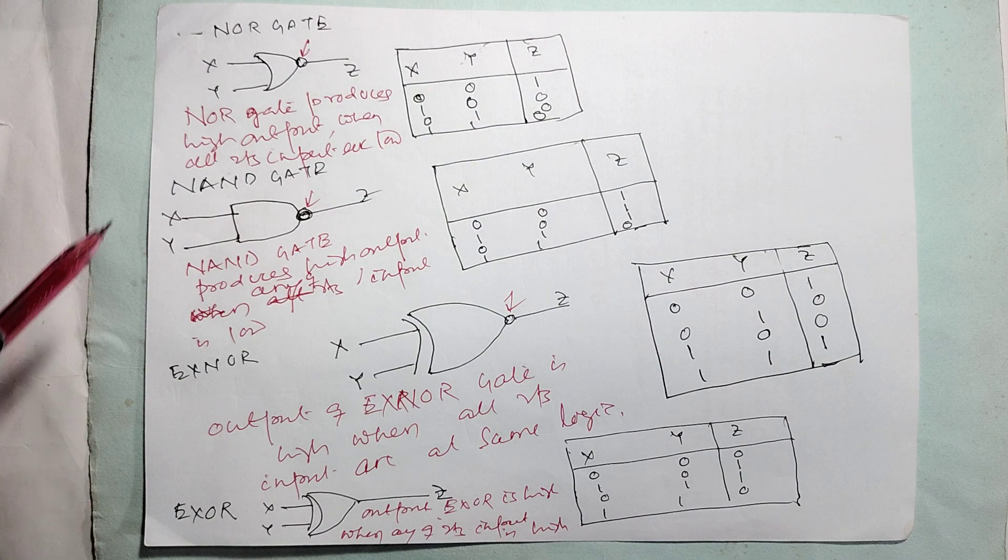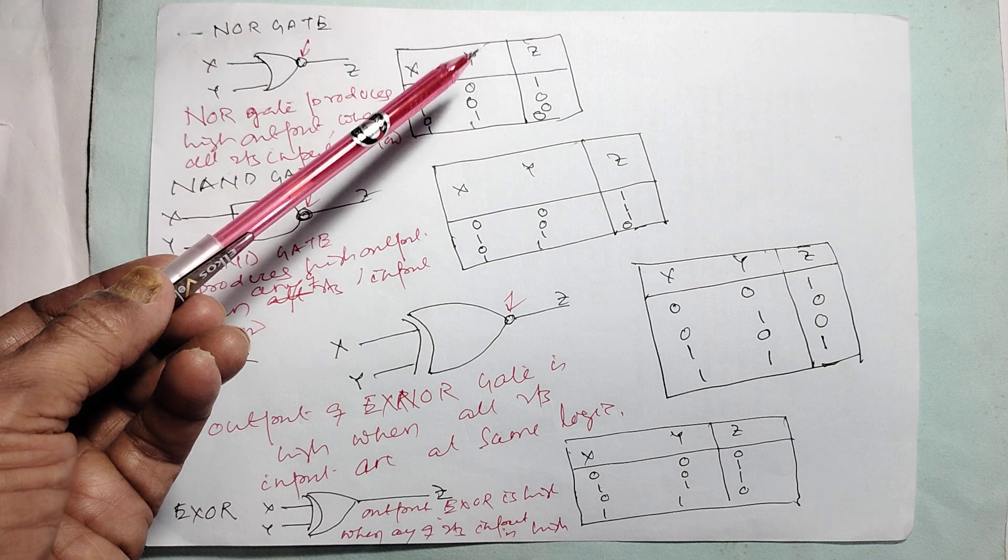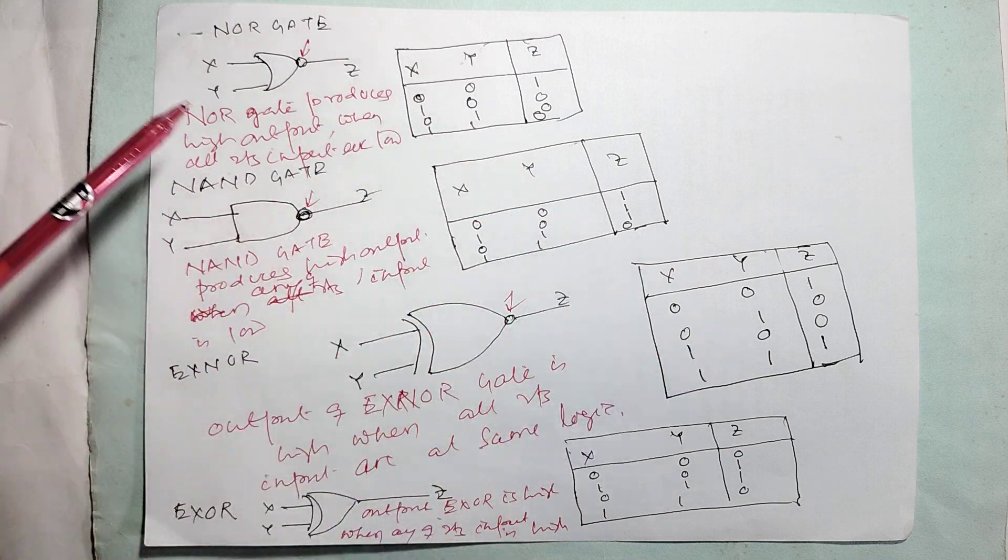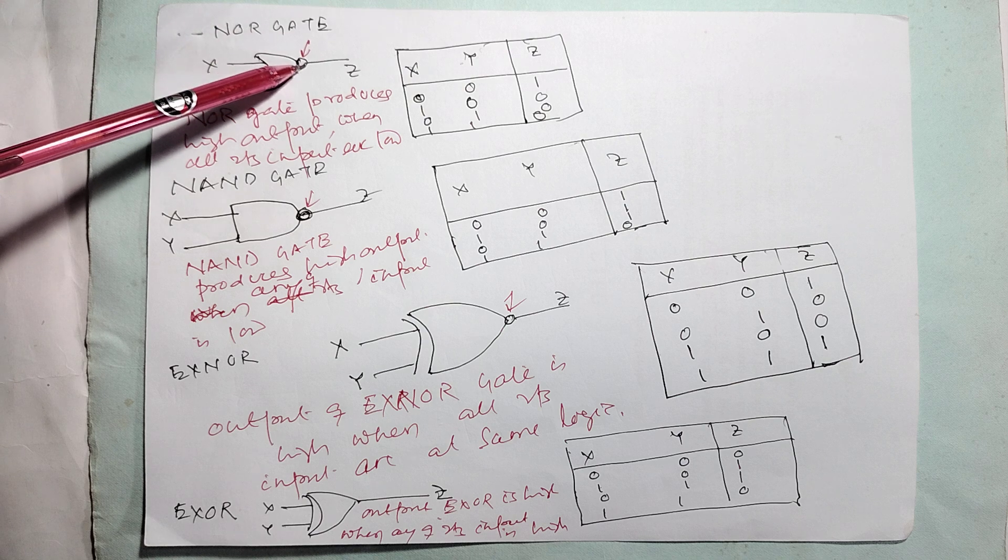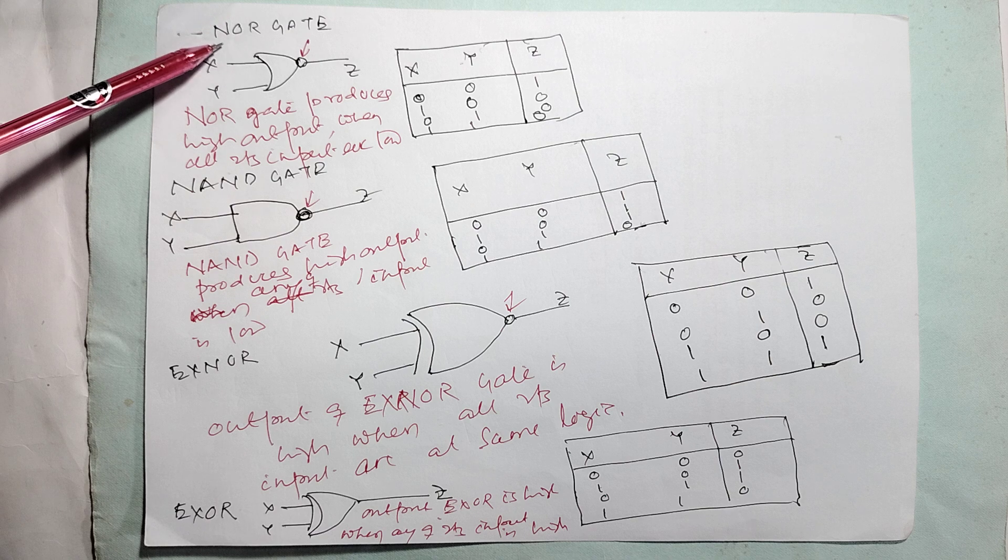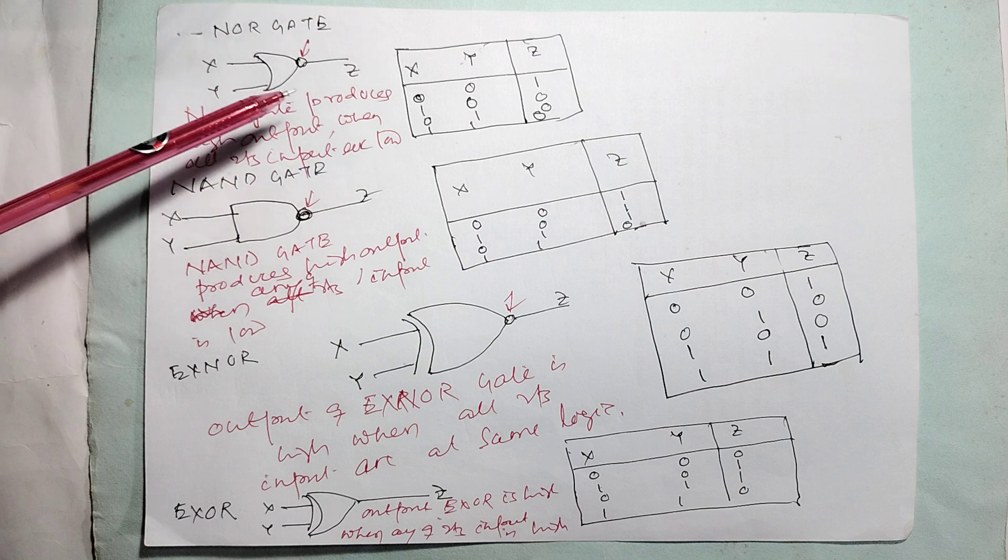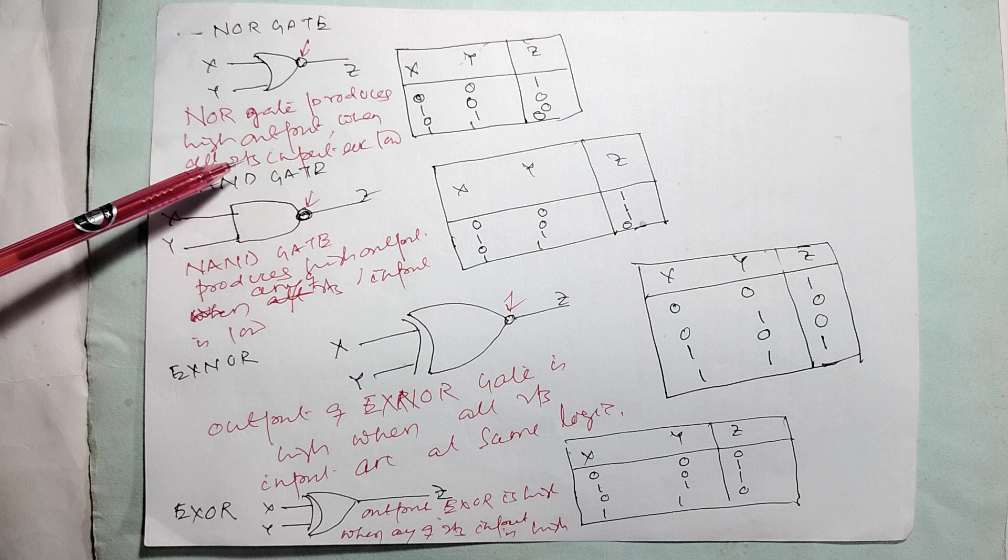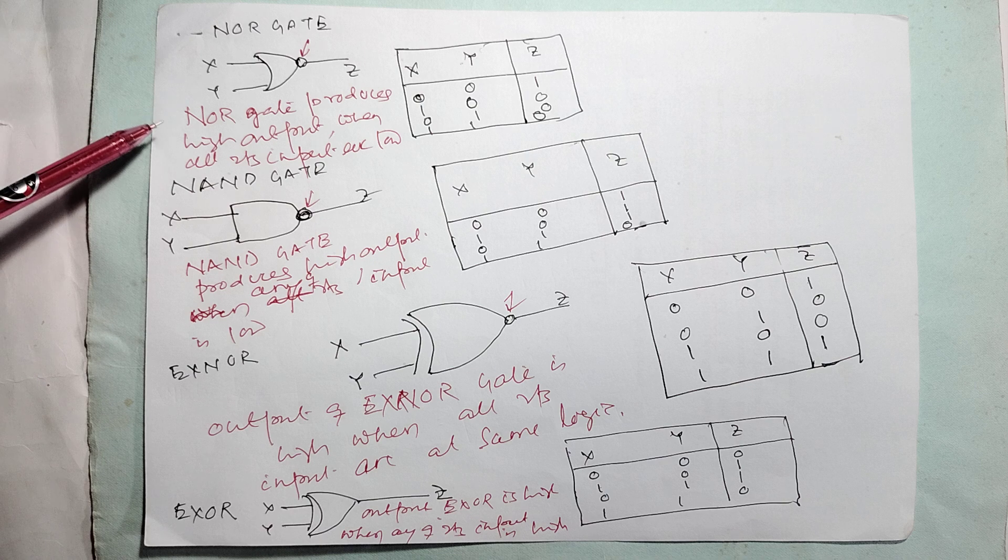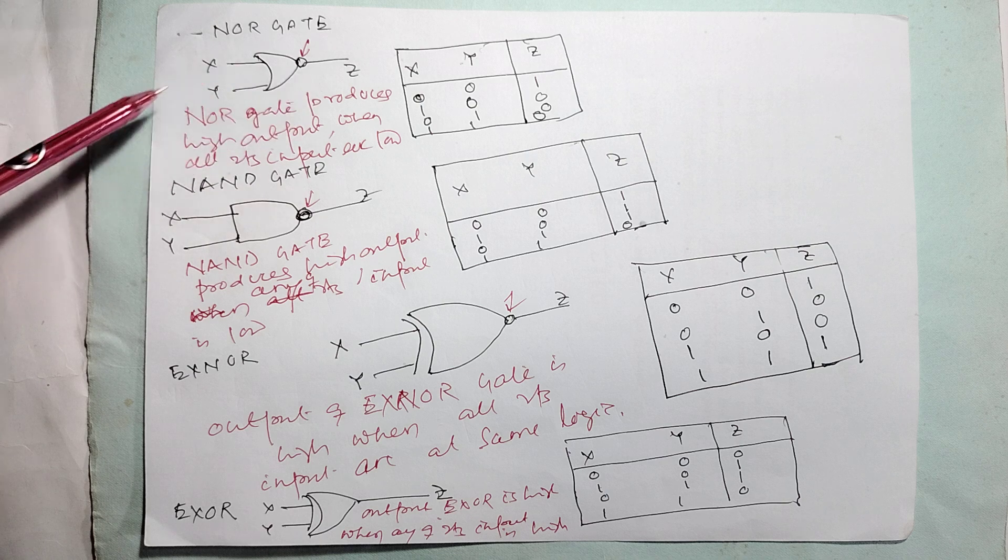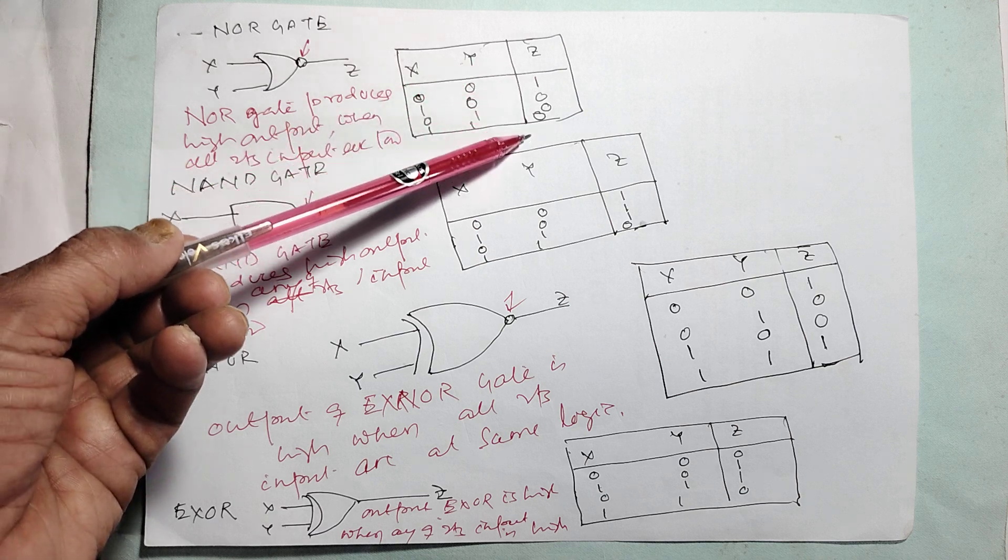Now NOR gate. What happens in logic truth table? These are the truth tables. What happens in NOR gate? It's simply the opposite of OR gate because the NOT symbol is there. If you simply change the OR gate truth table, it will be NOR gate. NOR gate produces high output when all inputs are low. Zero-zero is one; other cases it is zero.